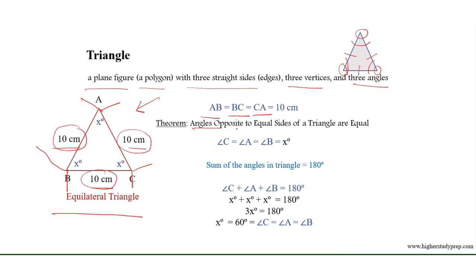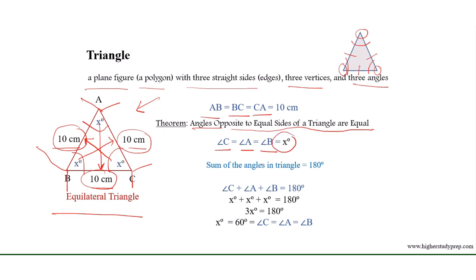As we know, angles opposite to equal sides of a triangle are equal. In this figure, angle C, angle A, and angle B are the angles opposite to the equal sides AB, BC, and CA. So angle C equals angle A equals angle B equals x degrees.